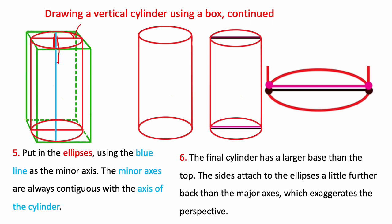The final cylinder has a larger base than it does a top and the sides can attach either to the major axis of the ellipse or a little further back if you want to exaggerate the perspective.